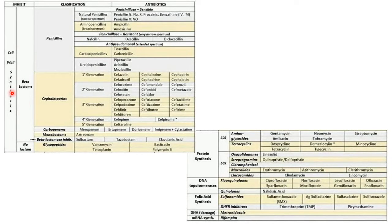For cell wall synthesis there are beta-lactams and non-lactams. For protein synthesis inhibitors, antibiotics are grouped by ribosomal subunit: 30S subunit includes aminoglycosides and tetracyclines; 50S subunit includes macrolides and lincosamides. Those working against DNA topoisomerase include fluoroquinolones and quinolones. Against folic acid synthesis you have sulfonamides; against DNA you have metronidazole; and against mRNA synthesis you have rifampin.